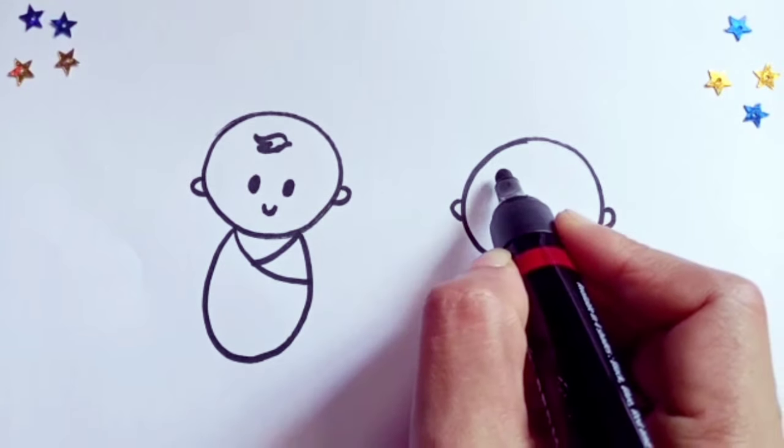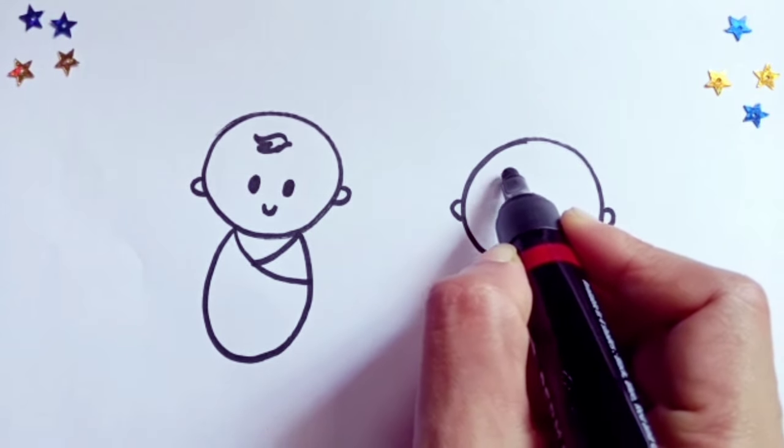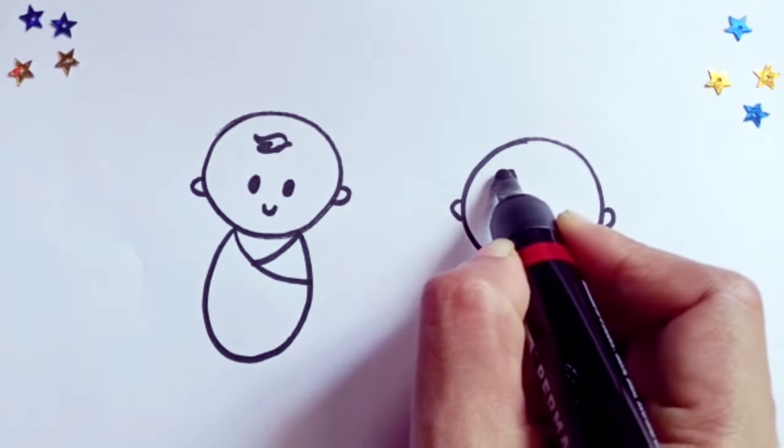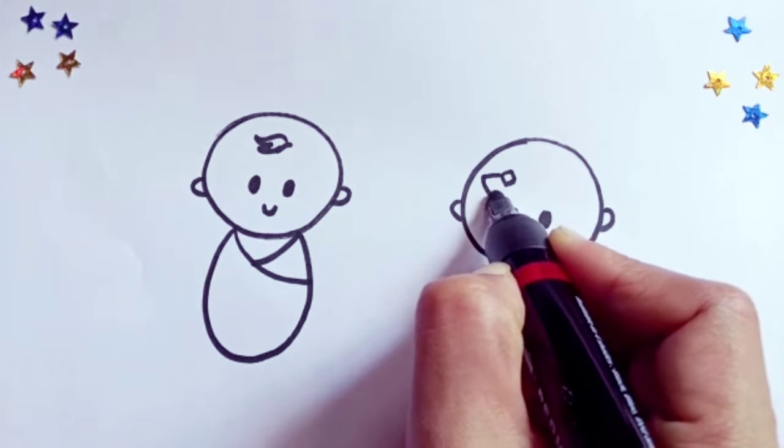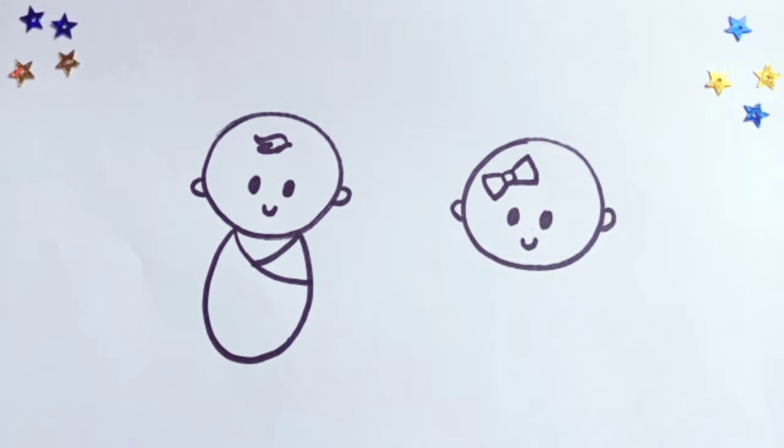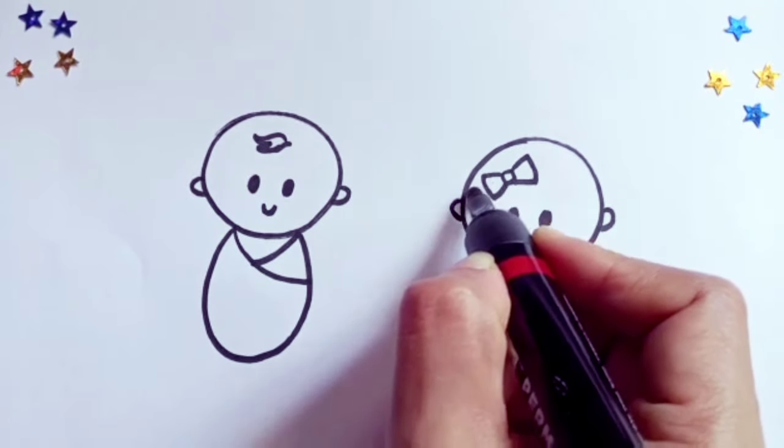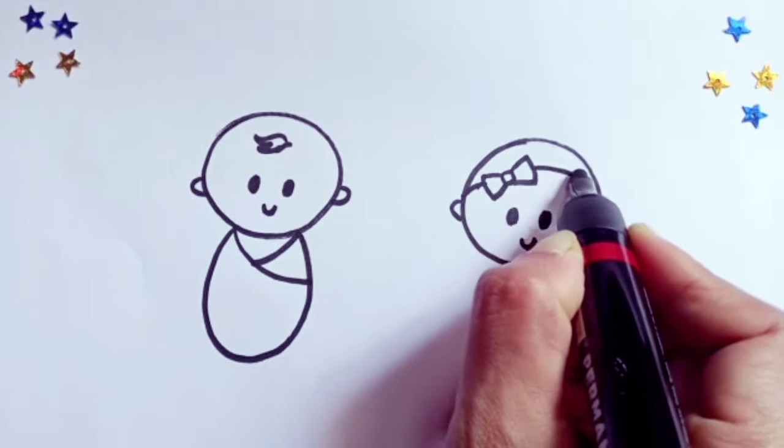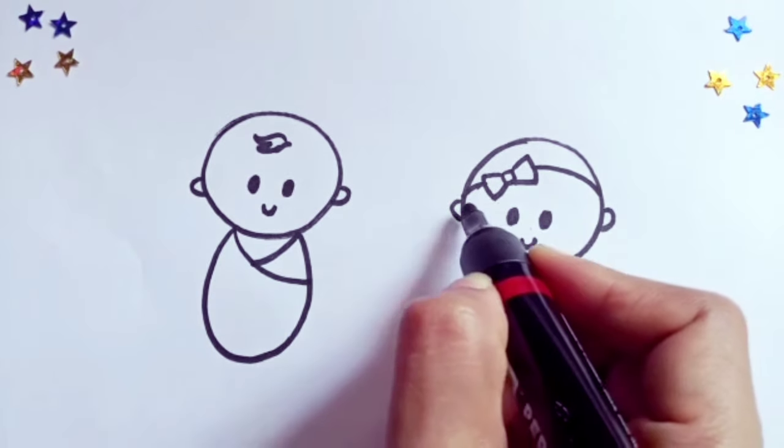Okay, now we'll draw a nice bow for the baby girl. Draw a small square. Okay, now draw a little semicircle like this joining her ears.